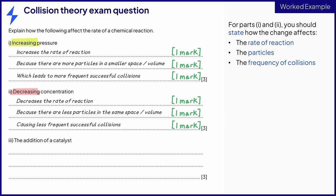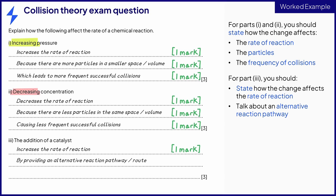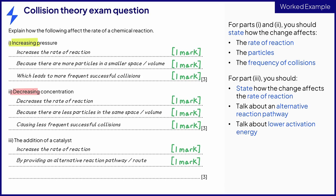Part three is about adding a catalyst, which requires a slightly different approach. First, state how the catalyst affects the rate of reaction: a catalyst increases the rate of reaction for one mark. Then talk about the reaction pathway: a catalyst provides an alternative reaction pathway or route for the second mark. Finally, talk about activation energy: the alternative pathway requires a lower activation energy for the final mark.